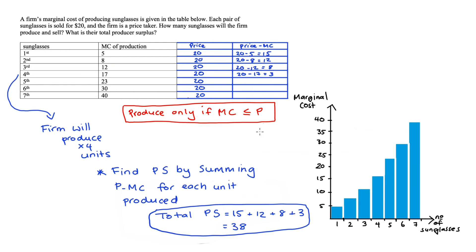Putting in the price at 20 here, we can see the price minus marginal cost for that first unit, for instance, is 20 minus 5, so 15. We could do this for each of the units produced. We can see the total producer surplus is visually represented as everything in green here.